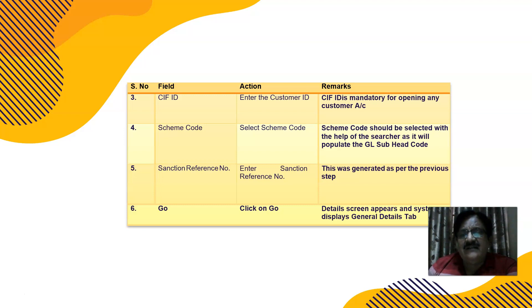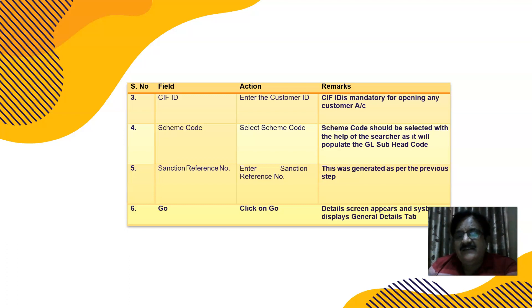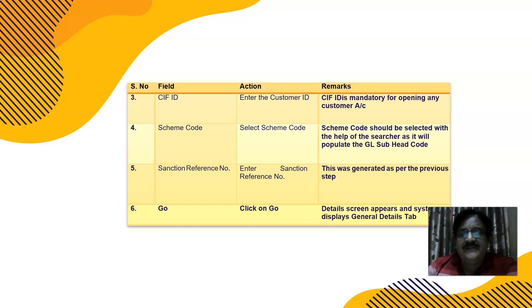The subsidiary general ledger head is populated, along with the sanction reference number — who sanctioned it, who recommended it, and the sanction letter date and number. You can write this here and it stays permanently in the system, so even if records are destroyed or misplaced, we can find out who gave the sanction.